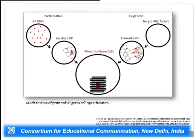In pre-formation, RNPs already present in the egg are partitioned during cleavage, so certain cells receive these cytoplasmic determinants and form the germ cells. In epigenesis — the inductive mechanism — there are no pre-PGC factors in the egg; instead, some cells are induced to form primordial germ cells that will give rise to the gonads in the adult.